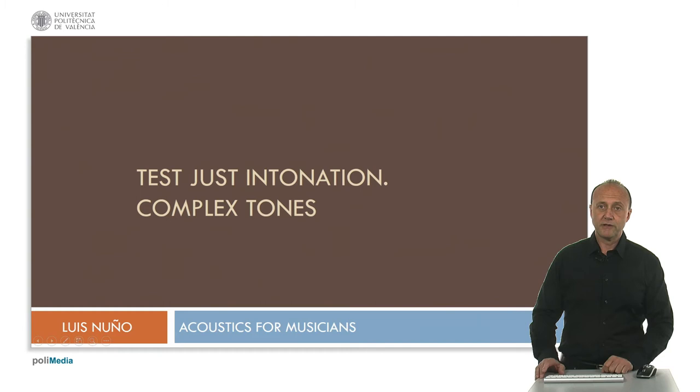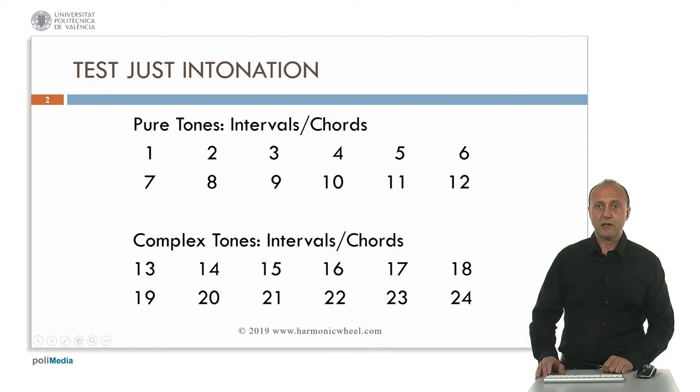Now I'm going to present an auditory test to check if we can distinguish between just intonation and equal temperament. Just intonation is the most exact tuning system because it matches the harmonic series. On the contrary, equal temperament does not match the harmonic series, so it is not so exact and it contains beats or beatings. However, it is the most used in musical instruments.